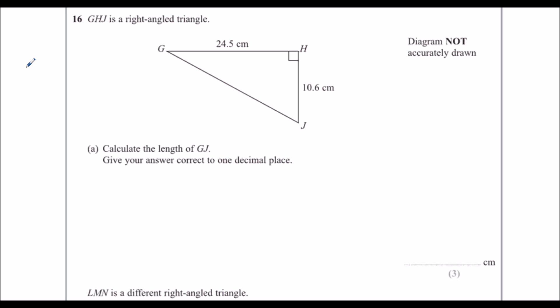Okay, so we've got a right-angled triangle, so straight away we need to think Pythagoras, SOHCAHTOA. The question says calculate the length of G to J. So this is x, we've got no angles in the question, so it's a Pythagoras question.